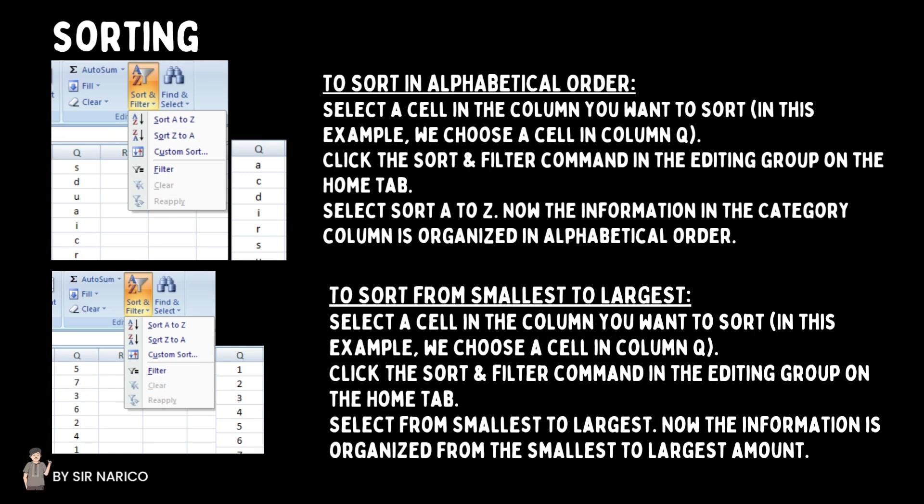To sort in alphabetical order: select a cell in the column you want to sort — in this example, a cell in column Q — click the Sort and Filter command in the Editing group on the Home tab, and select Sort A to Z. The information in the category column will be organized in alphabetical order. To sort from smallest to largest: select a cell in the column, click Sort and Filter, and select from Smallest to Largest. The information will then be organized from the smallest to largest amount.